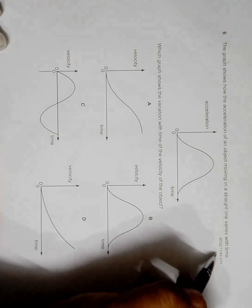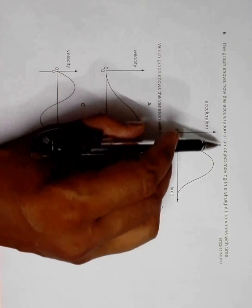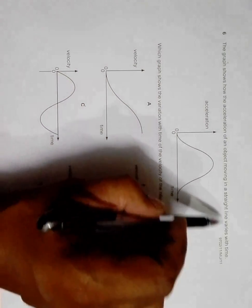This is the question from 2011 May-June paper 1, question number 6. The graph shows how the acceleration of an object moving in a straight line varies with time.